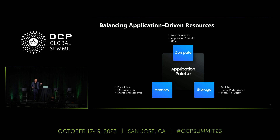As we heard this morning, performance per watt is a key indicator. Both riding a bike and what we're doing here are measures of performance per watt. On the compute side, we have a local orientation host solution close to where the application resides. You also heard about UCIE and how chiplets can provide a more efficient compute construct moving forward. For memory, Optane left us a couple of years ago, but customers are actually crying out for a persistent memory solution now that the market is ready.